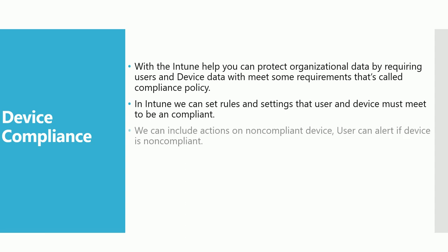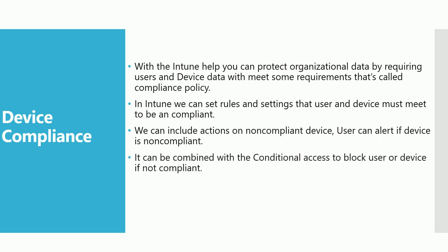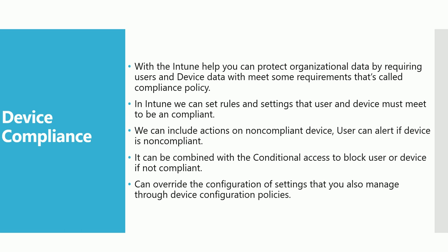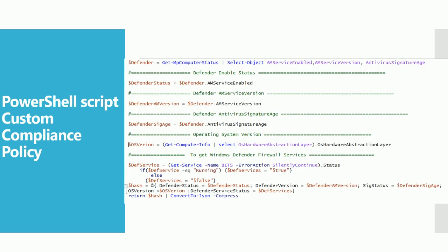We can include actions for non-compliant devices — like the user can get an alert if the device is non-compliant, or you can take action based on conditional access (CA) to block the user or device if it is non-compliant. It can also be overridden with the configuration settings that you can manage with your device configuration policies.